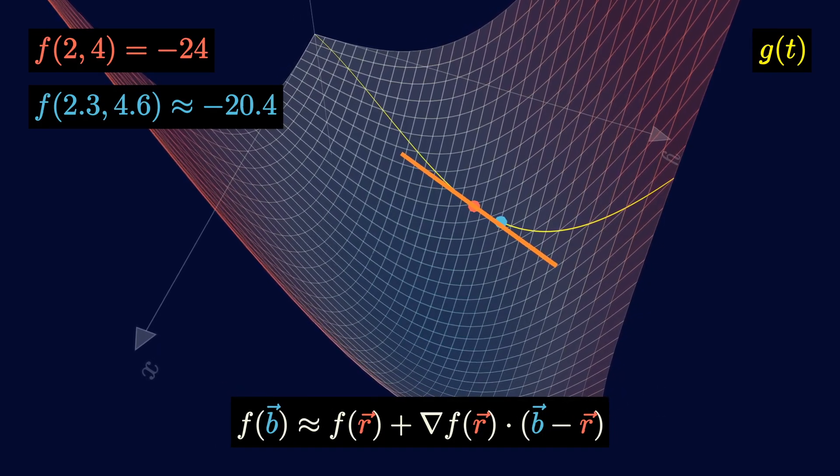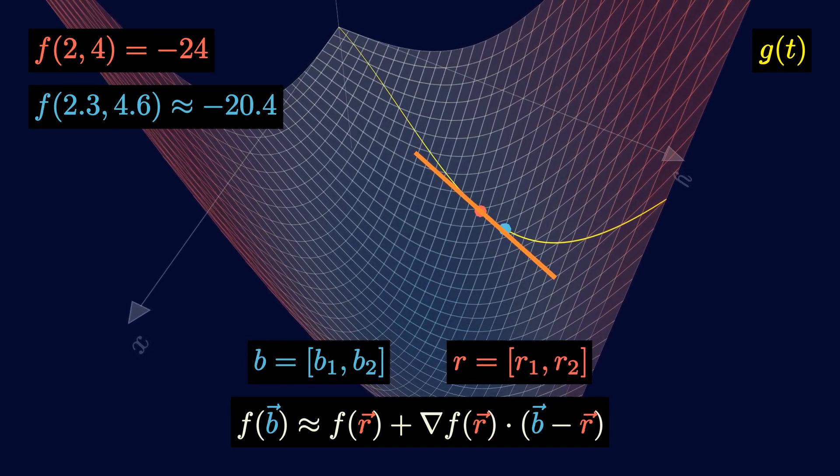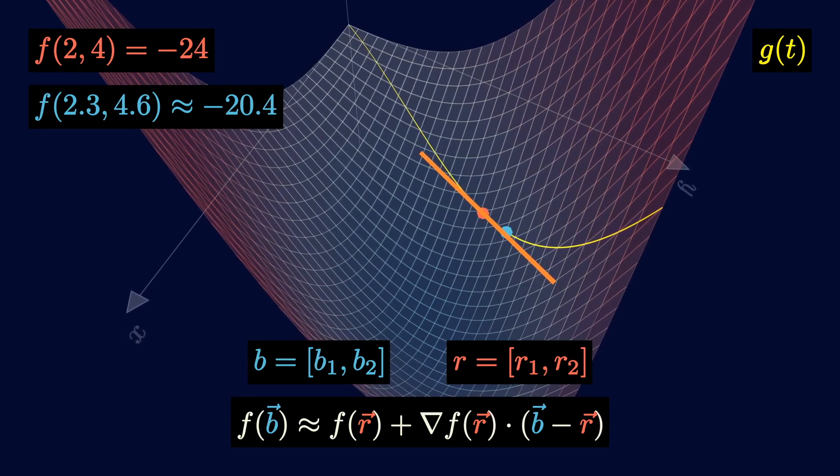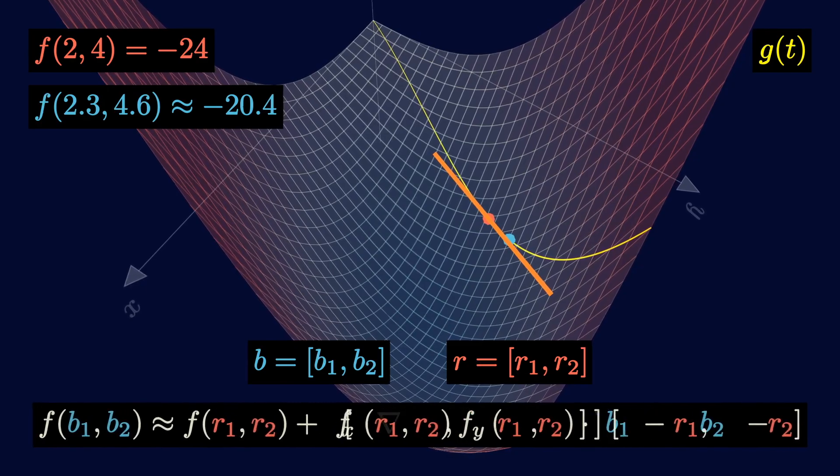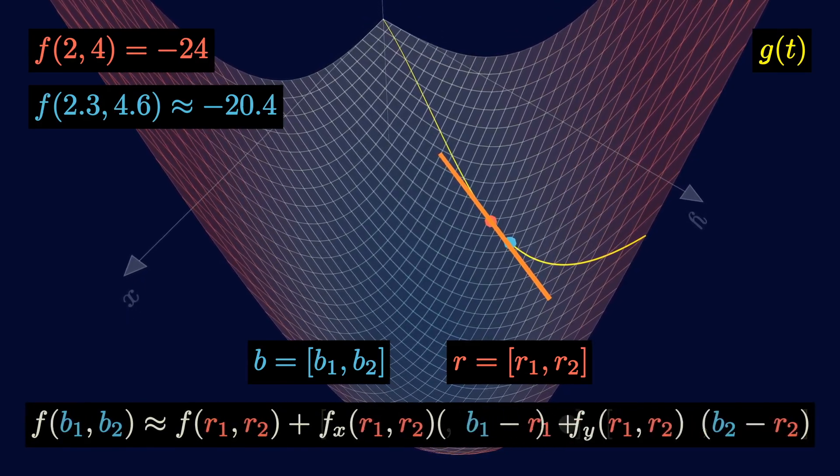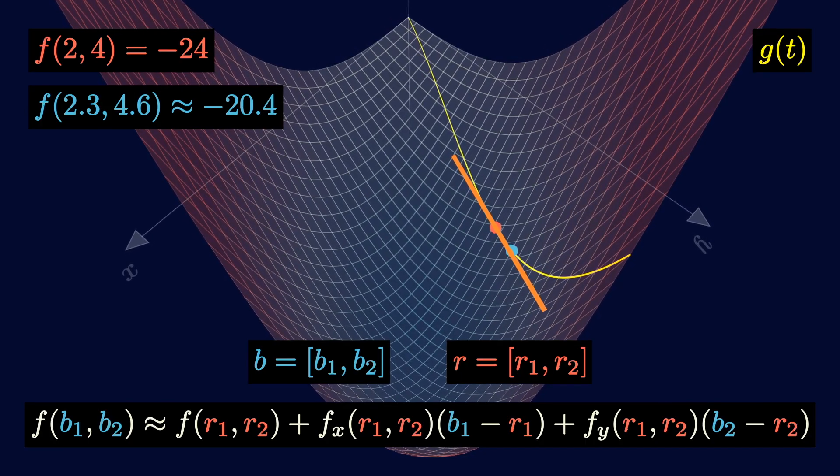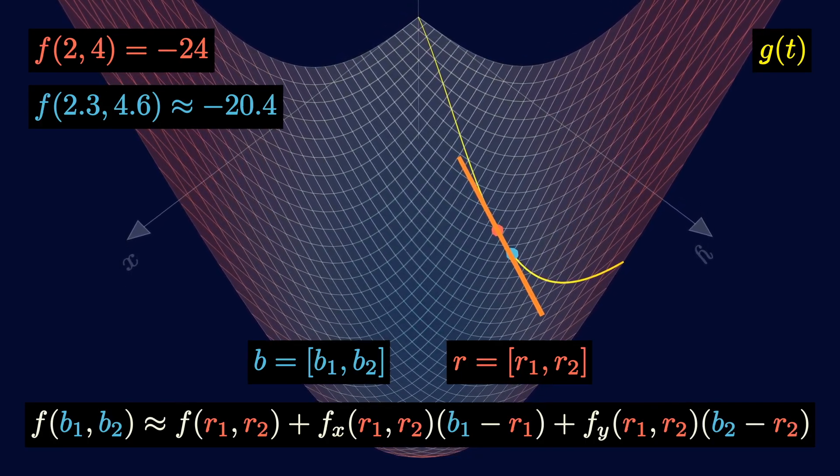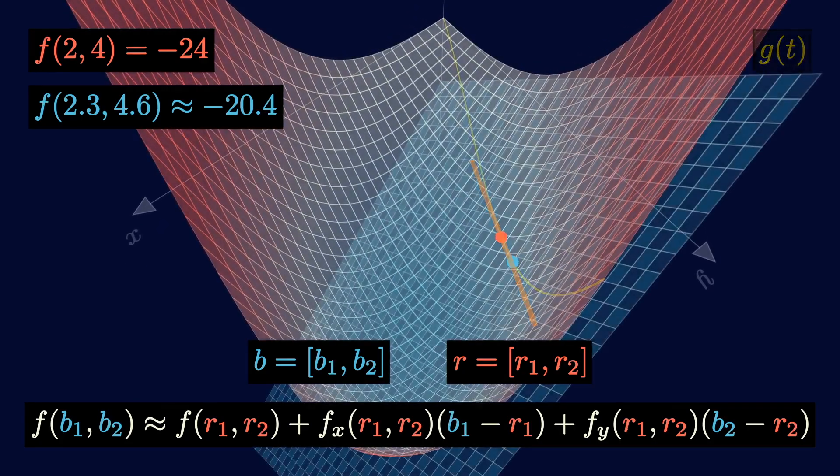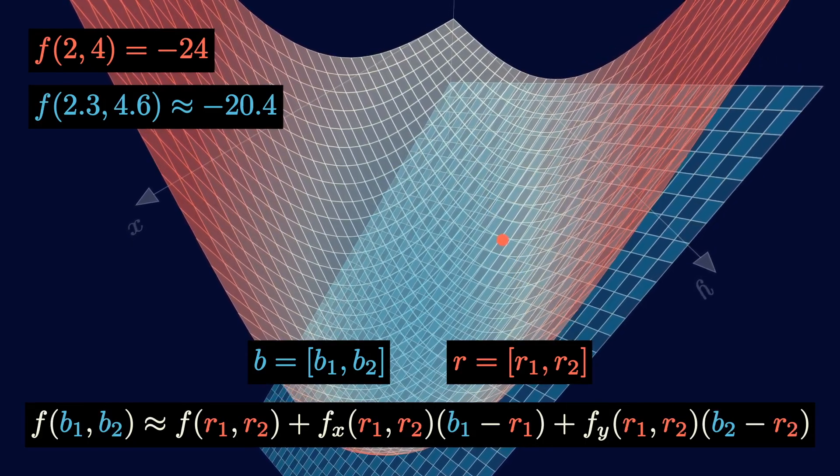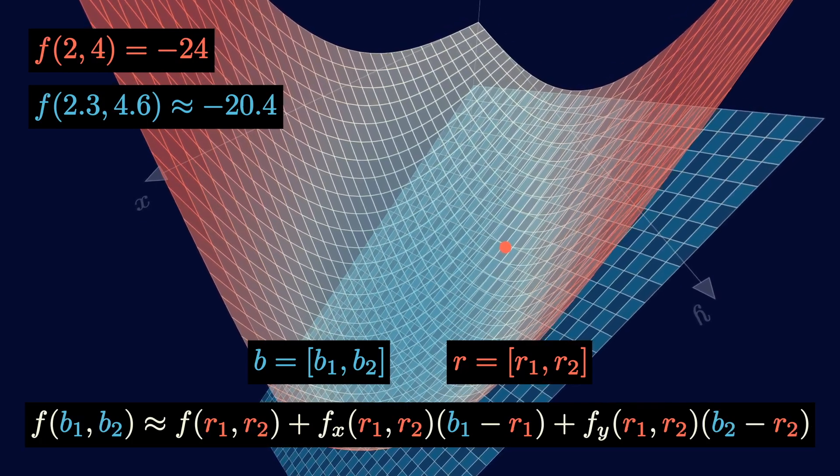Now b and r work for any two points. If b equals b1 b2 and r equals r1 r2, we can plug this into our expression. If we also write out the gradient and then expand the dot product, we get this expression. f sub x and f sub y are the partial derivative terms. This function in terms of b1 and b2 is a plane because we don't have any degree 2 terms. This is actually the first order Taylor polynomial and also the tangent plane at the red point.